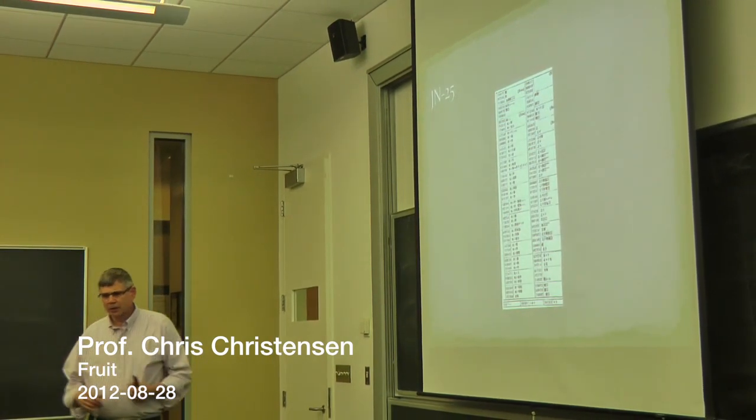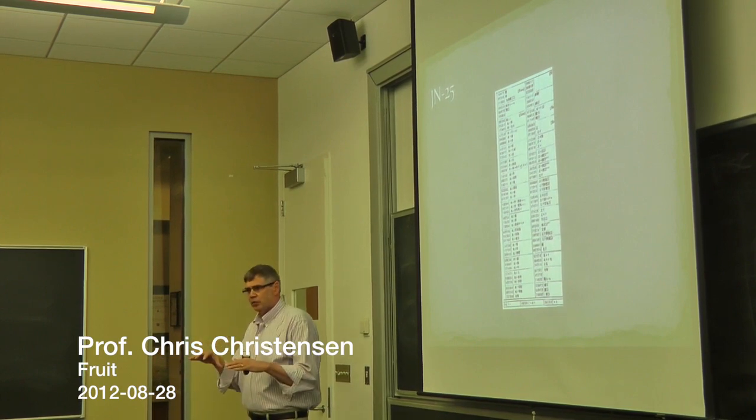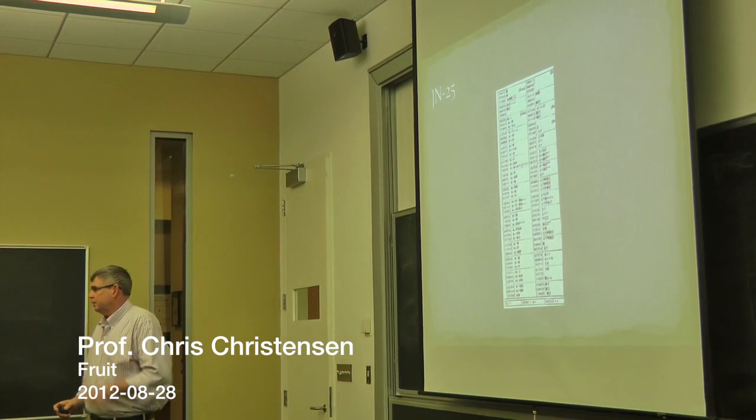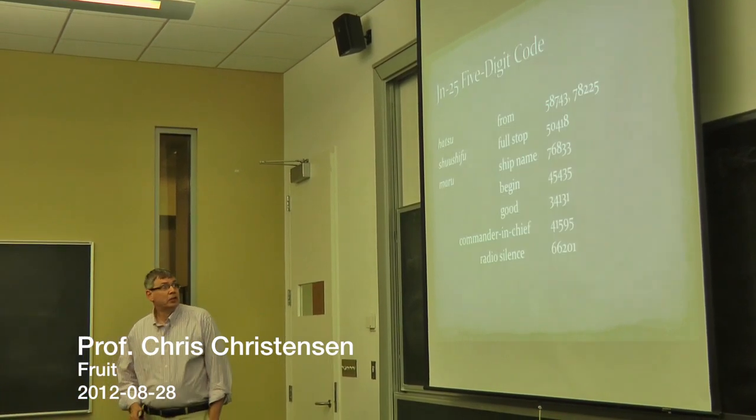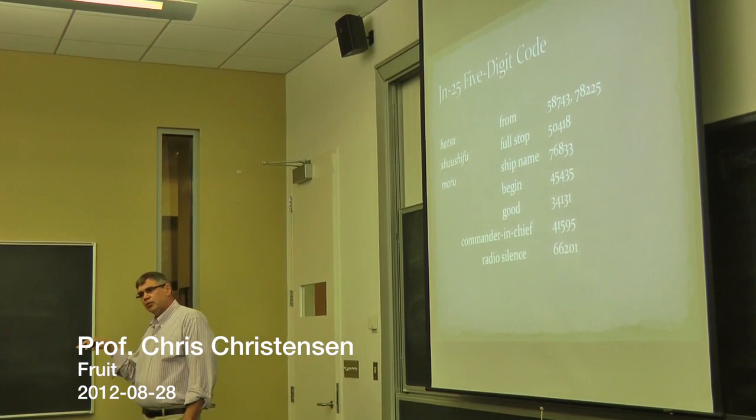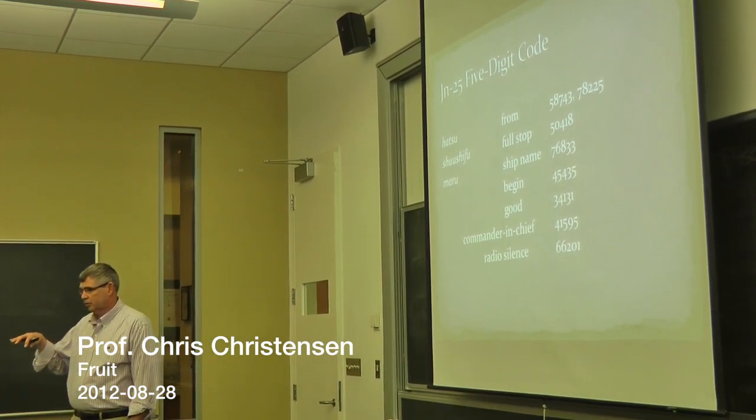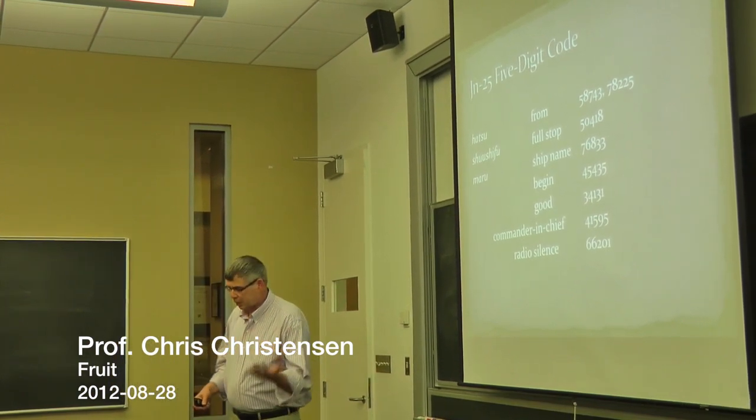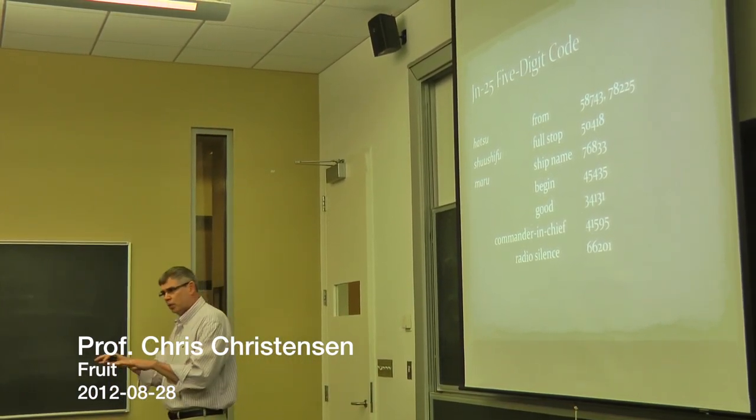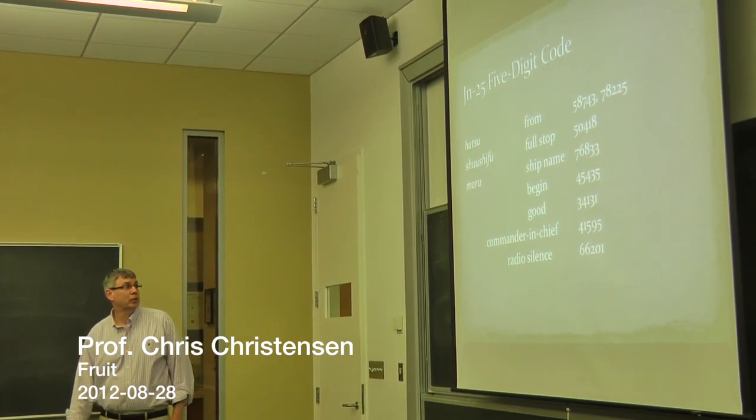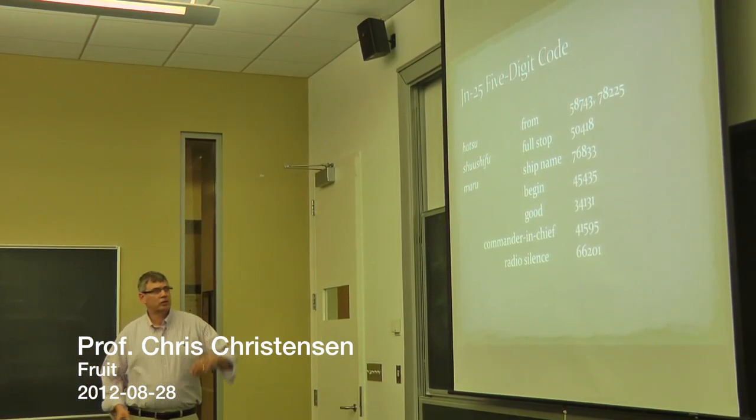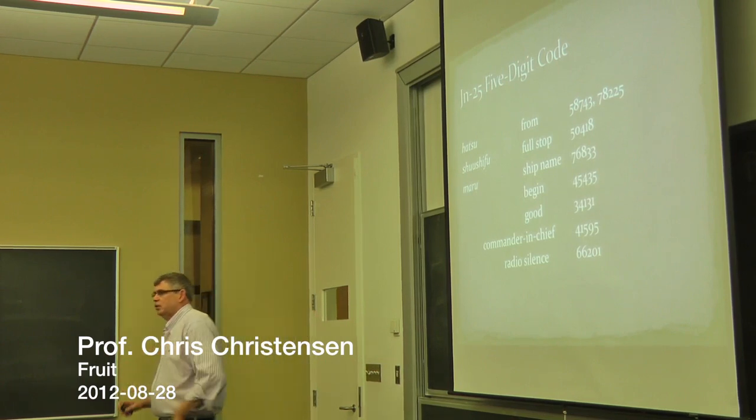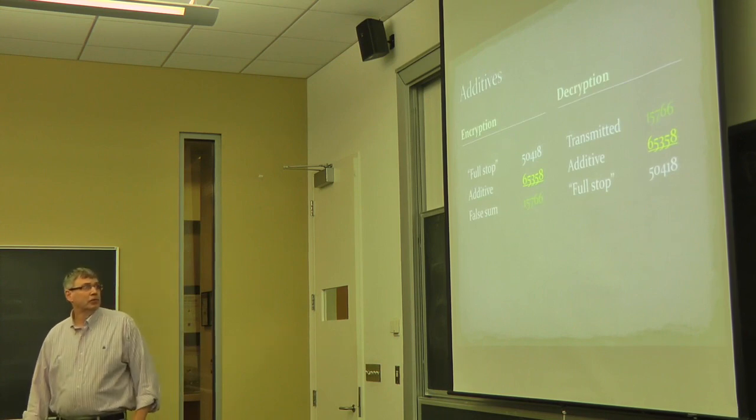I'll repeat a little bit of what I said yesterday. JN-25 was the primary Japanese naval cipher during World War II. It's based upon a five-digit code. So common words and phrases in Japanese were replaced by five-digit numbers. Now, codes are typically broken not by mathematicians, they're broken by linguists who understand how words and phrases fit together in languages. But to give additional security to this cipher, what the Japanese did is they overlaid it with a system of random numbers.